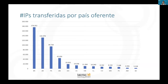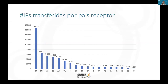Another interesting fact is the number of IPs transferred by country — the offering country being the organization going to transfer the addresses, and the receiving country being the one that receives them. If we look at the distribution by offering country, Brazil, Argentina, and Panama are the countries that, to date, have transferred the largest amount of IP addresses. In terms of receiving countries, Brazil is at the top of the list, followed by Mexico and Argentina, with all other countries having also received transfers.